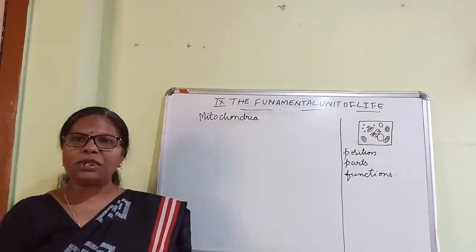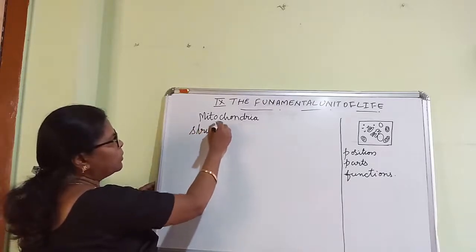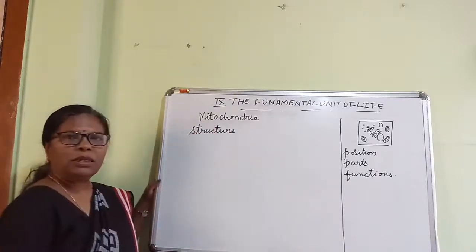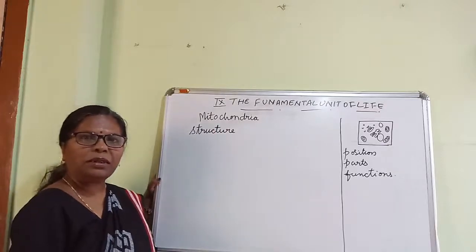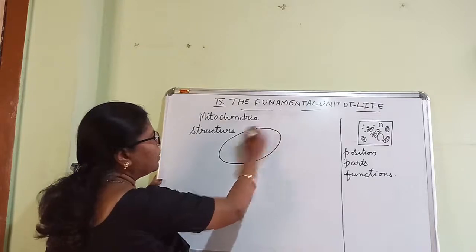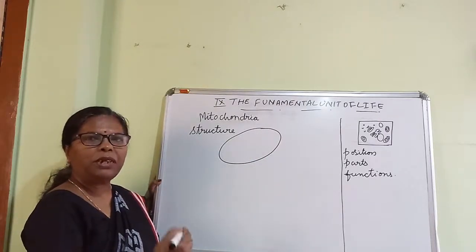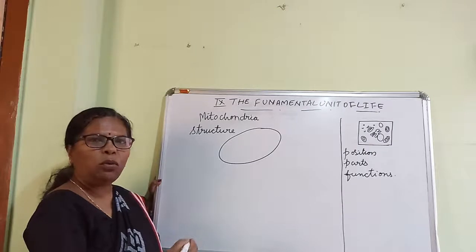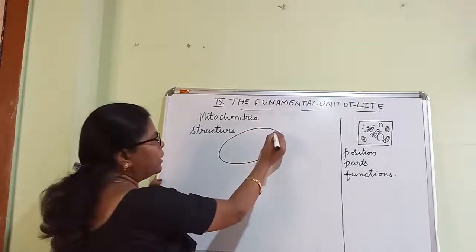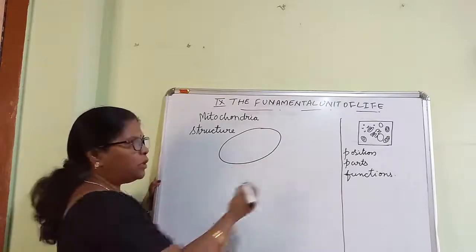Now let us know the structure of mitochondria. So this is a membranous organelle. It can be oval shaped or rod shaped. So it is an oval-shaped membranous organelle and it possesses two membranes.